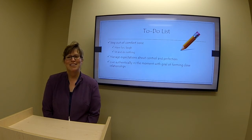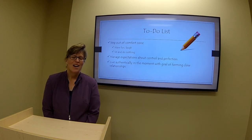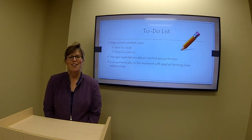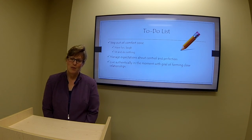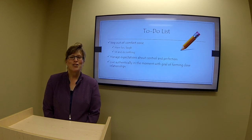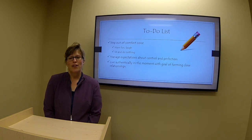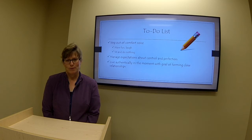Because I am task oriented, I find it helpful to make a to-do list of the things that will help overcome my weaknesses. I should step out of my comfort zone, have fun, and laugh more. I should manage my expectations about control and perfection, and I should try to live authentically, in the moment, focusing on forming close relationships.